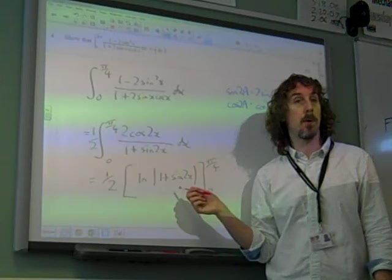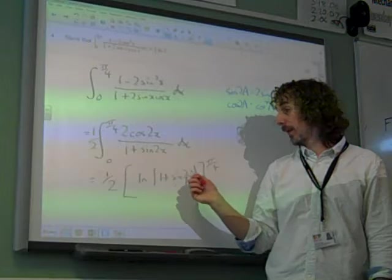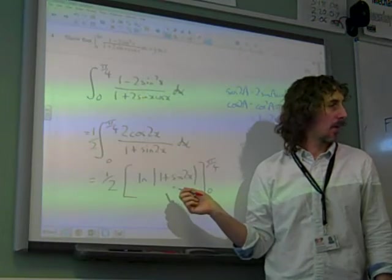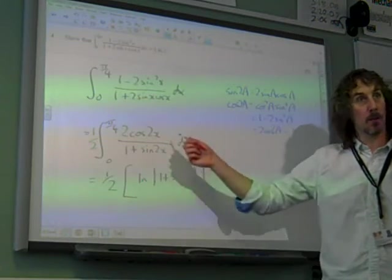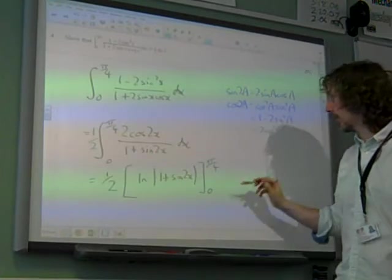Between 0 and pi by 4, sin is positive. Between 0 and pi by 2, sin is positive. So we don't need the modulus because that's always positive in the range we're looking at.